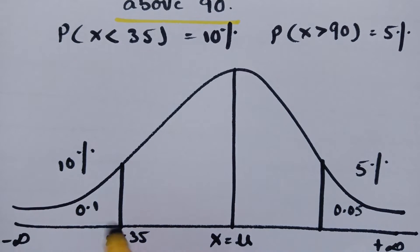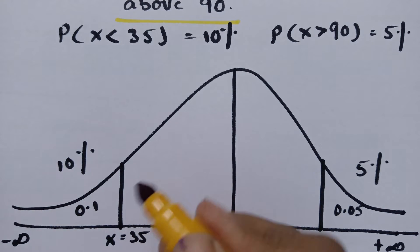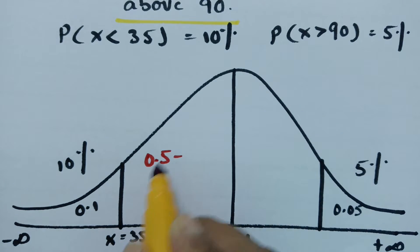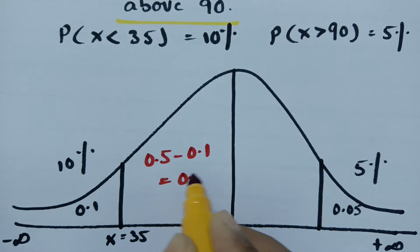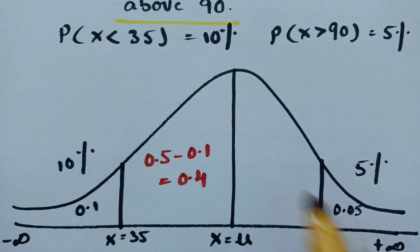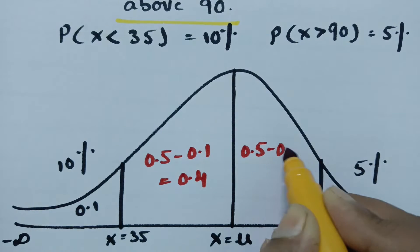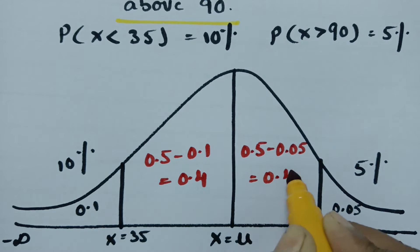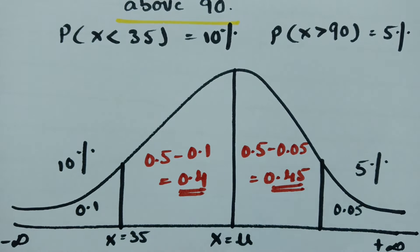Half of the curve is 0.5. After subtracting 0.1 from 0.5, the value between the mean and x=35 is 0.4. And 0.5 minus 0.05 gives the value between the mean and x=90 as 0.45. This is the value according to the figure.